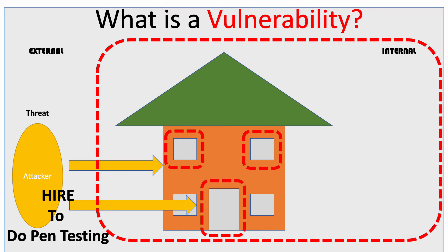How do we find these vulnerabilities? One of the things we could do is hire an ethical hacker to do some kind of penetration testing for us — do some scans and try to break in. In this instance, since we don't have any locks on the doors and windows, the attacker is going to be pretty easily able to get in. Then they'll report back and say, 'I was able to get in. There's a vulnerability with your house — the windows and the doors don't have locks on them.' So that's one way we can find vulnerabilities.